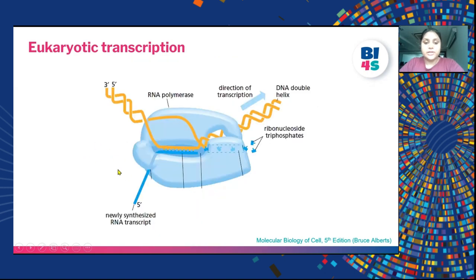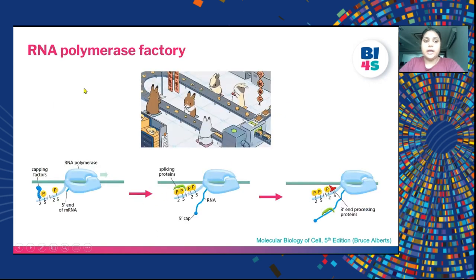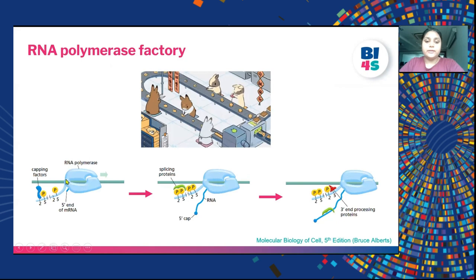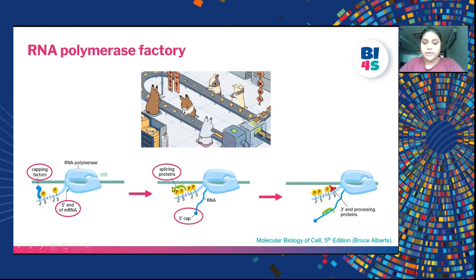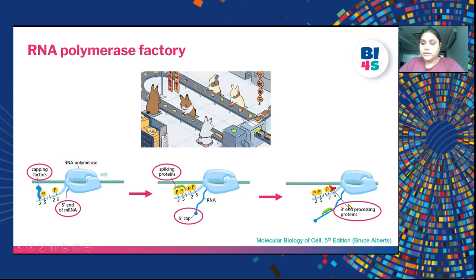Once transcription has begun, a newly synthesized RNA transcript comes out of the polymerase from 5' to 3'. Like different workers in a factory performing different tasks, in the RNA polymerase machinery different proteins perform different tasks simultaneously. While transcription is going on, capping is also happening at the 5' end of mRNA with the help of capping factors, splicing is happening, and 3' end processing — that is poly-A tailing — is also occurring.